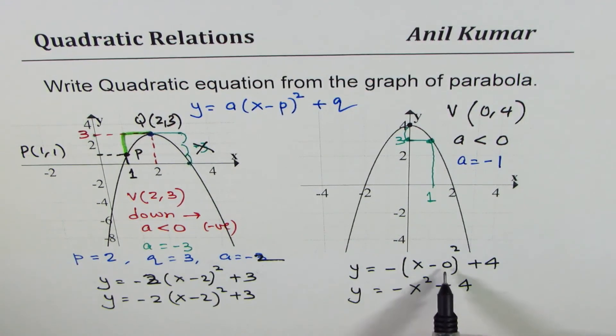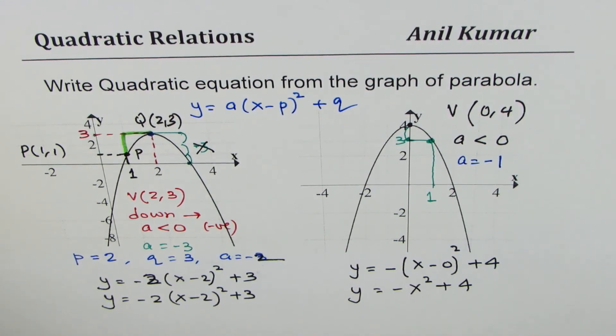Does it make sense to you? Since X minus 0 is X, so we get our equation as Y equals to minus X square plus 4. I hope that makes sense to you.